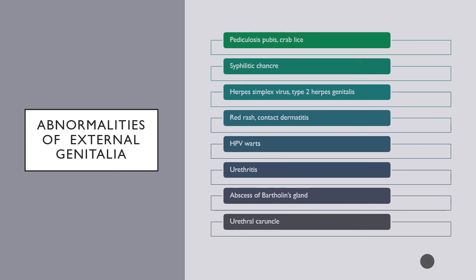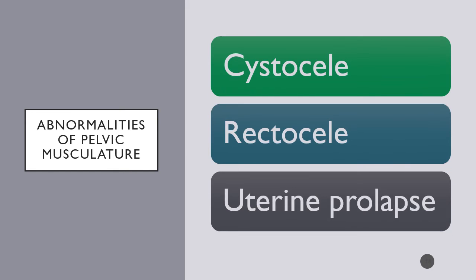Bartholin's gland can sometimes abscess, causing noticeable swelling or shift that you can palpate. A urethral caruncle can be notable on inspection and palpated as well. Internally, you can find a cystocele (bladder prolapsing into the vagina), a rectocele (rectum prolapsing into the vagina), or uterine prolapse (uterus prolapsing down into the vagina). Pictures are in your book on page 766. Patients may use pessaries to help keep those structures in place, and surgeries are also available to correct these problems.